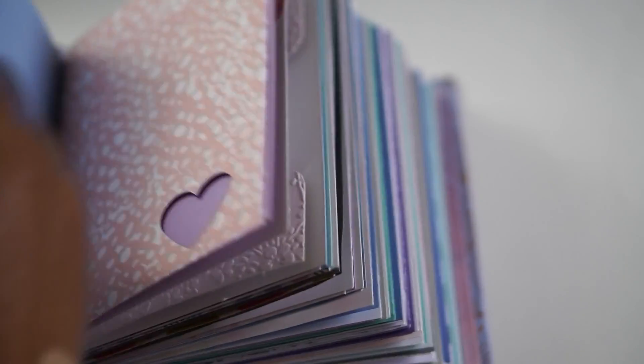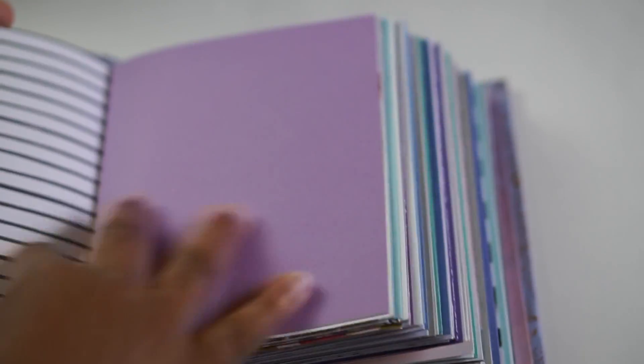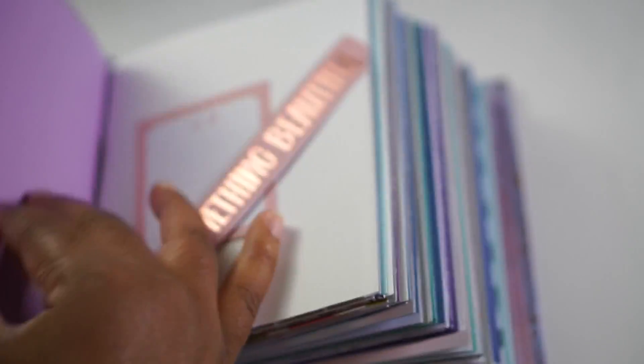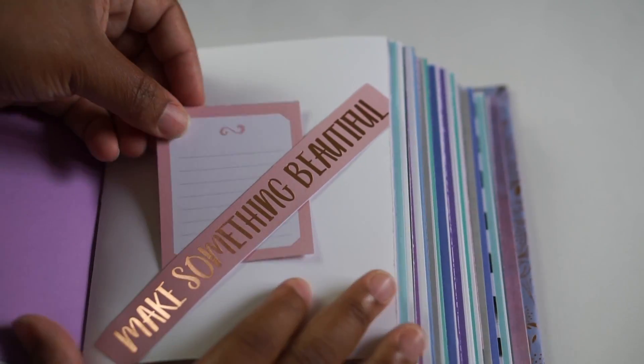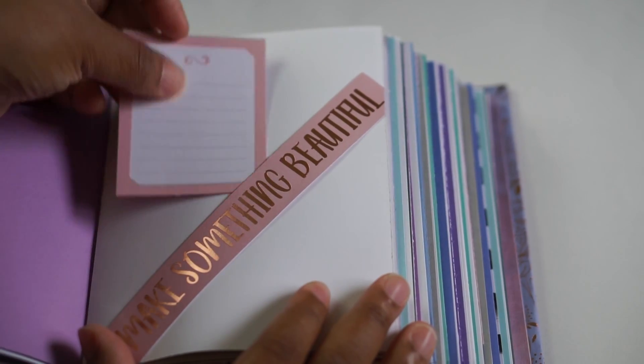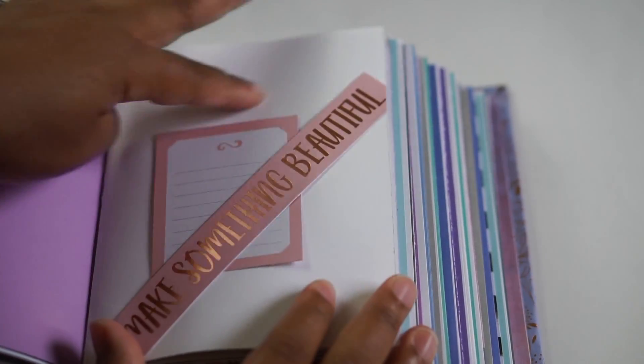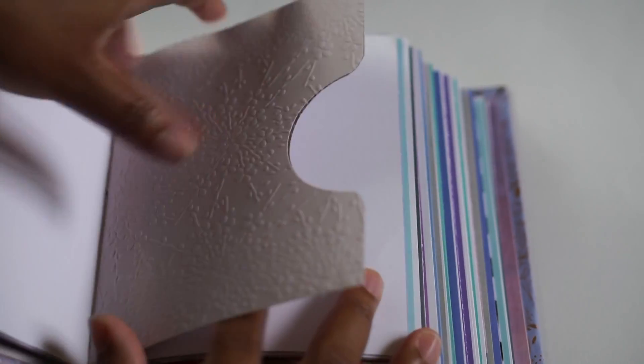So, little tuck spots. Again, this is for journaling, for little punches, for sticking little things in here. You can stick a picture in here. You can write on this and stick it back in here. You can write on the paper and plus stick something in there.